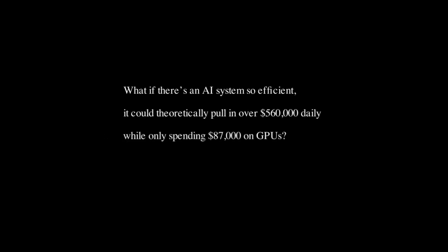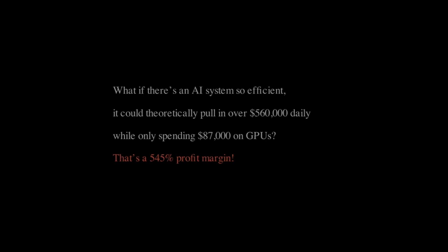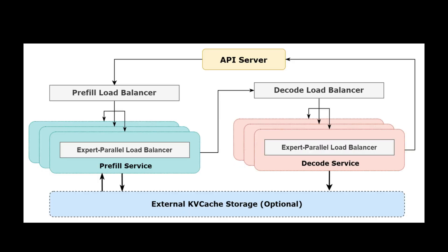This is basically how DeepSeek manages 268 peak GPU nodes while keeping daily costs at just $87,000, with the ability to serve a theoretical $560,000 worth of tokens at a 545% profit margin. This is a work of art, and a lot of Western companies are likely already learning from it.